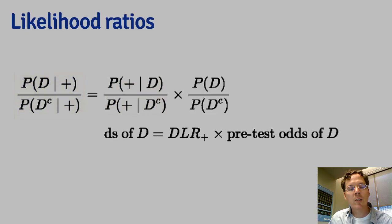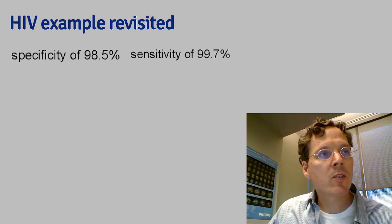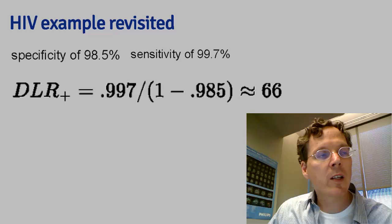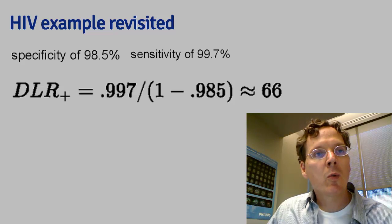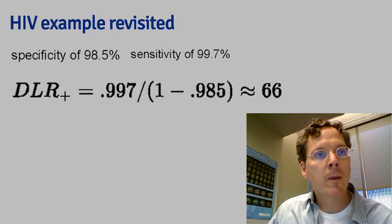The diagnostic likelihood ratio of a positive test result is the factor by which you multiply your pretest odds to obtain your post-test odds. Using our sensitivity and specificity from before, the diagnostic likelihood ratio works out to be 0.997 divided by 1 minus 0.985, which equals 66. No matter what your pretest odds are, you multiply them by 66 to obtain your post-test odds. In other words, the hypothesis of disease is 66 times more supported by the data than the hypothesis of no disease. If the pretest odds are very small, multiplying by 66 still results in a small number, though 66 times larger.